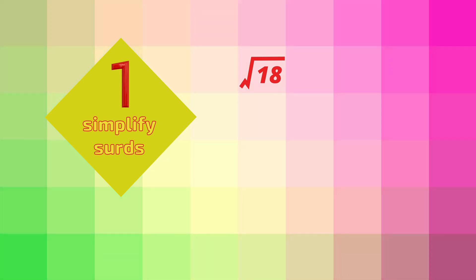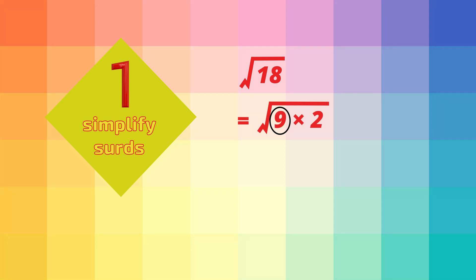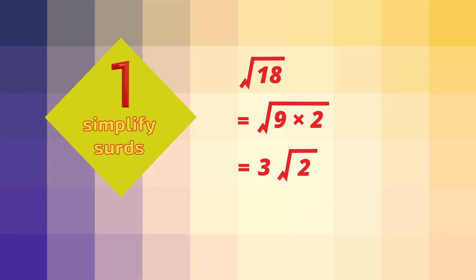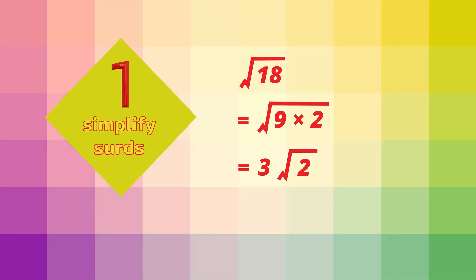Now let's simplify the square root of 18. First we find the factors of 18 where one of those factors is a square number. 18 is 9 times 2, and 9 is the square number. So the square root of 18 equals the square root of 9 times 2, all inside the square root symbol. The square root of 9 is the exact number 3, so we take that 3 outside of the square root sign and put it in front. But the square root of 2 is not exact, so we leave that as a surd. Root 18 is 3 root 2.